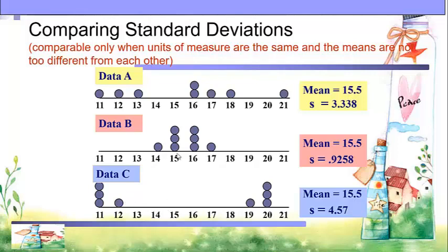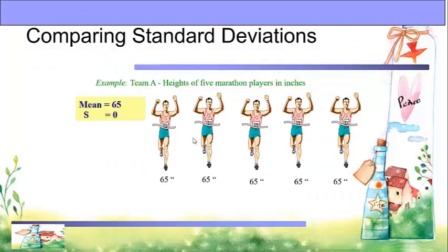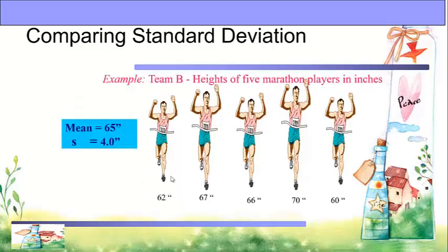Comparing standard deviations by example: Team A has 5 marathon players whose heights are all equal. So the mean is equal and the standard deviation is 0, meaning the heights do not differ from each other. In team B, the heights of 5 marathon players are not equal: 62, 67, 66, 70, and 60 inches. Finding the mean gives 65 inches, but their heights vary, resulting in a standard deviation of 4.0.